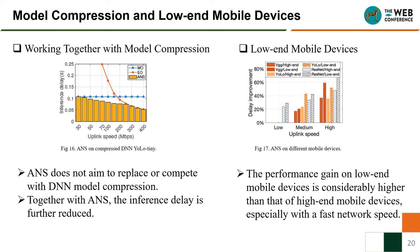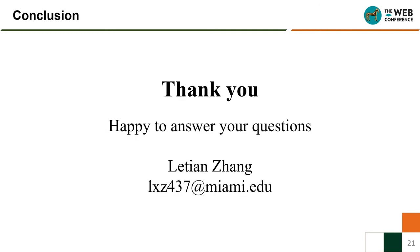Figure 16 shows the performance of ANS on compressed DNN models. ANS does not aim to replace or compete with DNN model compression; instead, together with ANS, the inference delay is further reduced. Figure 17 shows ANS on different mobile devices — the performance gain on lower-end mobile devices is considerably higher than on high-end devices, especially with a fast network speed. In conclusion, we propose ANS, a new online learning module for collaborative deep inference. ANS can predict the inference delay, select a partition point, and provide differential quality of service to keyframes and non-keyframes, significantly reducing inference delay compared to pure on-device processing or pure edge offloading. Thank you for listening — I'm happy to answer your questions.